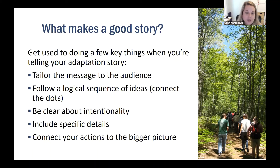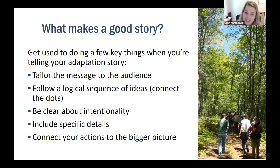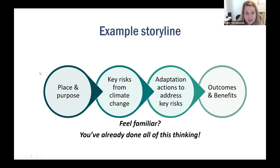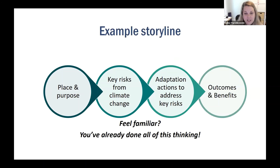To tell a good story, you need to think about your audience. Think about how your adaptation plan might be communicated differently for different audiences — not just your supervisor, but what would your story look like for the wider community or a funding agency? We want a logical sequence of ideas to connect a series of dots into a coherent story, including specific details about your adaptation plan, but just the level of detail needed to get your point across — not every literal detail. Think about the bigger picture: how does what you're doing connect to climate change, vulnerabilities, and ecosystem management? A simple example storyline: start with your place and purpose, move on to key risks from climate change, adaptation actions to address those risks, and then the benefits and outcomes of your actions.